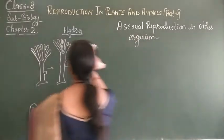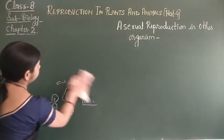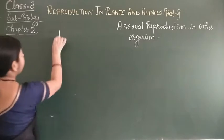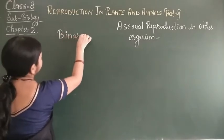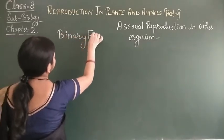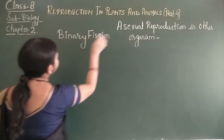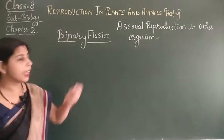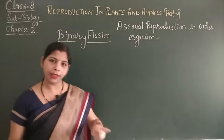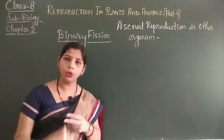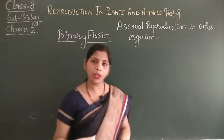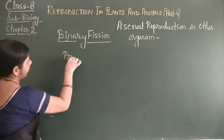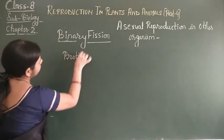Now let's see the other process, which is binary fission. The word 'bi' means two and 'fission' means breakdown. That means the organism breaks down into two daughter cells and new daughter cells are formed. Binary fission occurs in protists, and the protist here is amoeba.